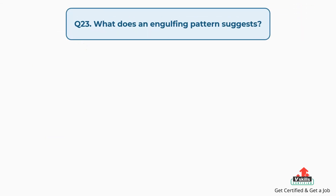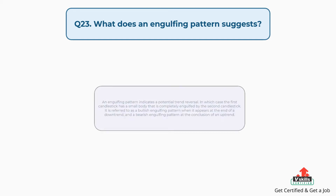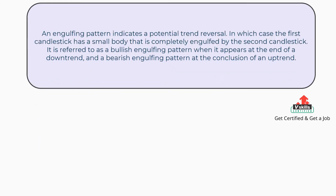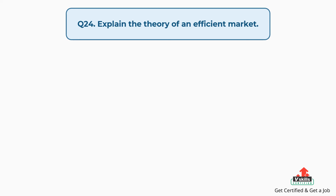Question number 23: What does an engulfing pattern suggest? An engulfing pattern indicates a potential trend reversal, in which the first candlestick has a small body that is completely engulfed by the second candlestick. It is referred to as a bullish engulfing pattern when it appears at the end of a downtrend, and a bearish engulfing pattern at the conclusion of an uptrend.